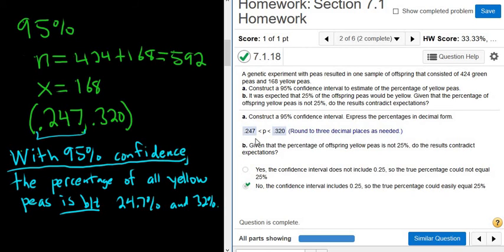So what does this mean? Here we have a sample. N is the total number, x is the number of successes. We put it into our software, and we got a range of values for the percentage of all yellow peas. 95% means if you do this 100 times, you're going to have 100 different samples, so you'll get 100 different answers. 95 of your answers will be correct. That's what 95% confidence means.